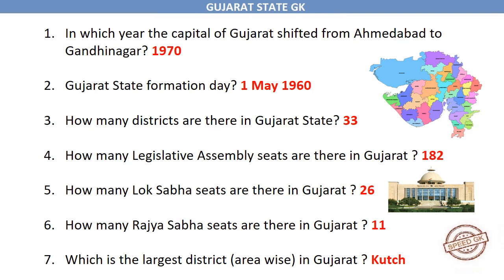33 districts. How many legislative assembly seats are there in Gujarat? 182. How many Lok Sabha seats are there in Gujarat? 26. How many Rajya Sabha seats are there in Gujarat? 11.